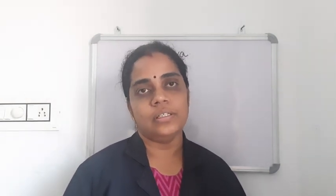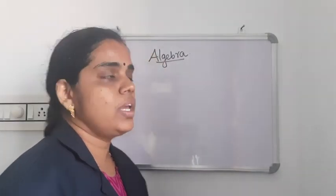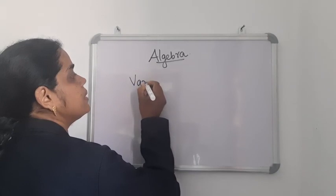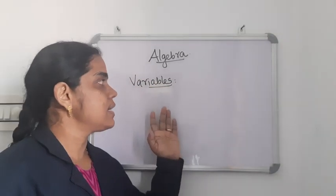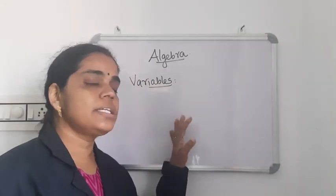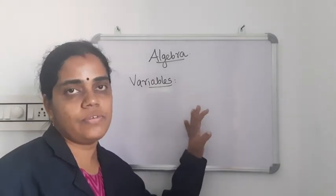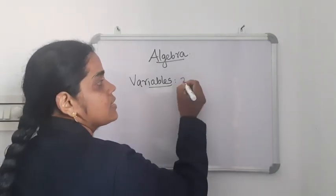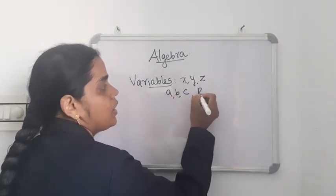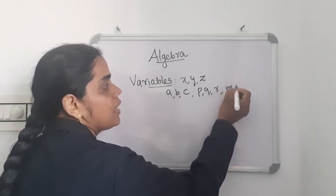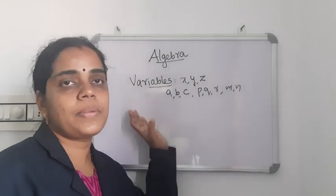First of all you need to learn about a variable. What is a variable? The word meaning itself is 'varying' — so variable. Variables means usually we are using the English alphabets. Small letter English alphabets we are using to represent a variable. It may be small letters: X, Y, Z, or A, B, C, P, Q, R, M, N — any small letter English alphabets we can use to represent a variable.